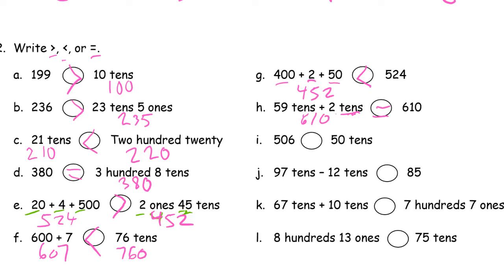Now, if you haven't yet, pause this and see how you do on the rest of them, then come back and check how you did. Five hundred six. Fifty tens is five hundred, so five hundred six is a little bit more than five hundred.